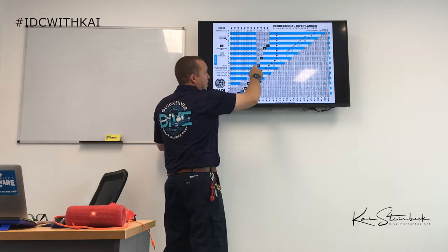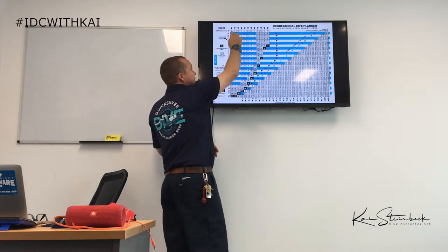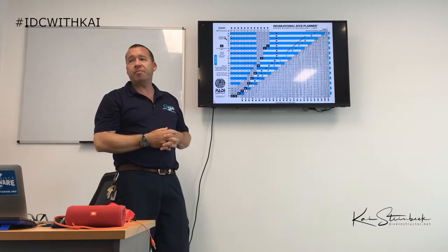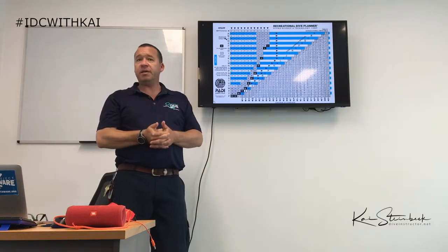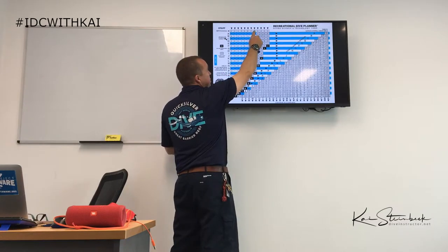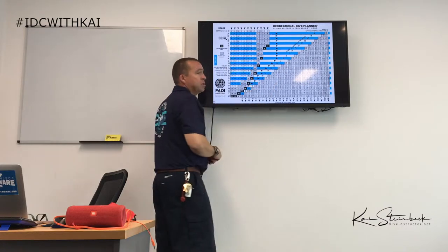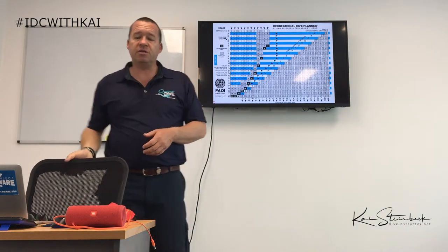The grey shaded area on the table means I must do a safety stop. Inside each box is a number — the time I'm going to spend at that depth. For example, if I'm diving to 23 metres for 20 minutes: there's no 23, so I use 25; I want 20 minutes and there's 19 and 21, so I use 21. Looking to the left or right, I find I'm in pressure group K. That is how I calculate my first dive — very simple.